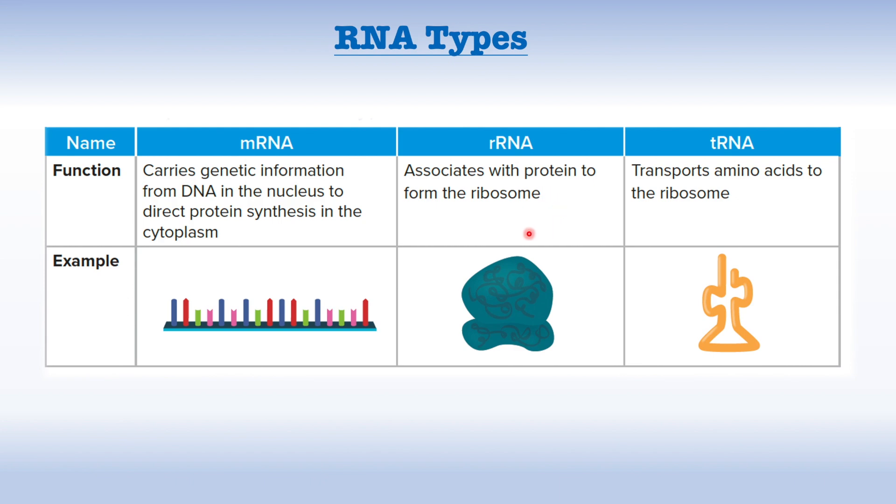The second type, ribosomal RNA, is a major component of ribosomes which are the sites of protein synthesis. The third type, transfer RNA, helps decode messenger RNA sequences into a polypeptide chain, meaning protein. It brings the appropriate amino acids to the ribosome during translation, ensuring the correct sequence of amino acids in the protein.